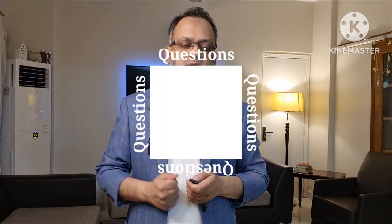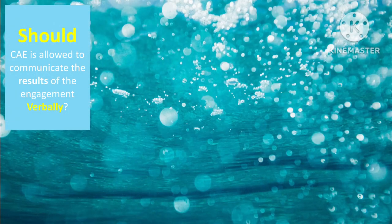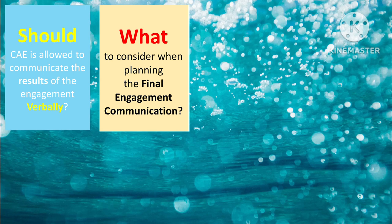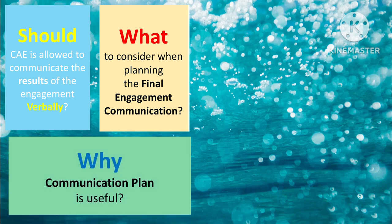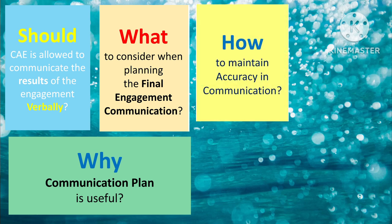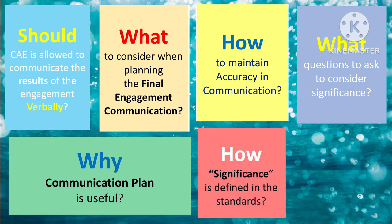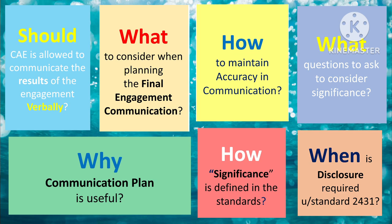Let's start with our customary practice of asking some interesting questions. While we review all these standards, we'll try to get responses to those questions. Should the Chief Audit Executive be allowed to communicate the results of the engagement verbally? What to consider when planning the final engagement communications? Why is a communication plan useful? How to maintain accuracy in communication? What questions to ask to consider significance? How significance is defined in these standards? And when is disclosure required under standard 2431?